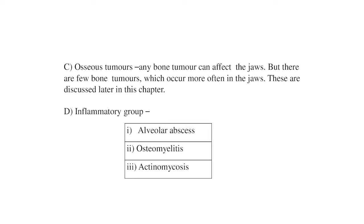Third is osseous tumors — any bone tumor can affect the jaw, but a few occur more often there, discussed later in this lecture. The inflammatory group includes alveolar abscess, osteomyelitis of the jaw, and actinomycosis. These are all the classifications of jaw swelling.